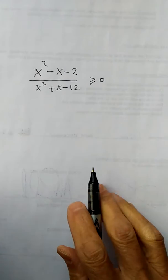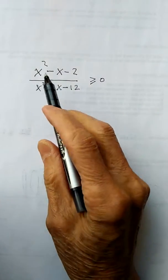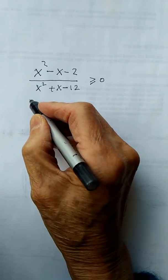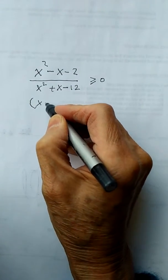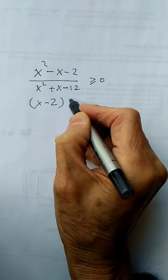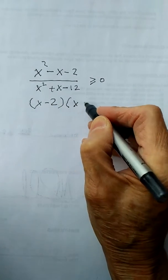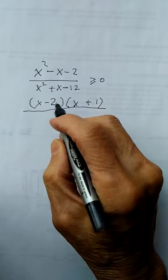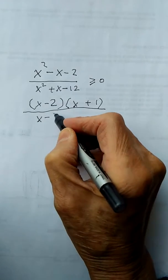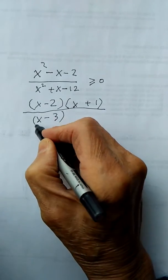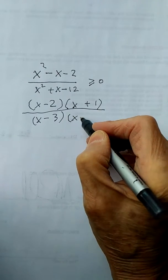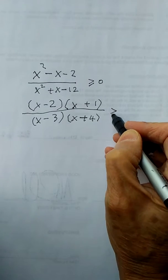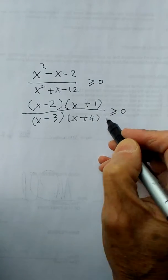The first thing to do is to factor the numerator and factor the denominator. I'm not showing the detail of the factoring, but the result is: (x minus 2)(x plus 1) divided by (x minus 3)(x plus 4), and this is larger than or equal to 0.